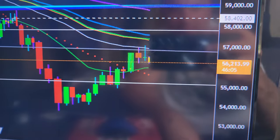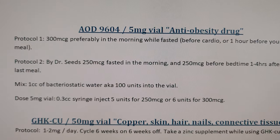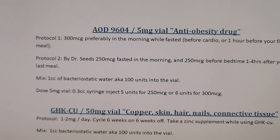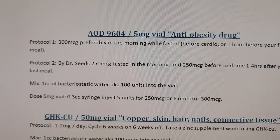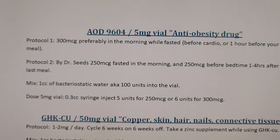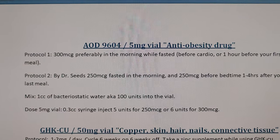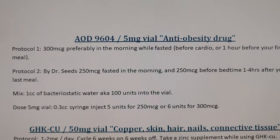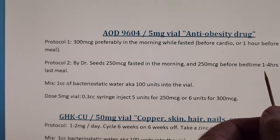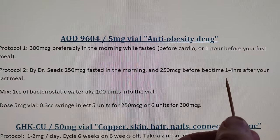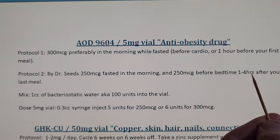AOD 9604, five milligram anti-obesity drug. Protocol number one: 300 micrograms, preferably in the morning while fasted, before cardio or one hour before your first meal. Protocol number two by Dr. Seeds: 250 micrograms fasted in the morning and 250 micrograms before bedtime, one to four hours after your last meal. This depends on whether you're on tirzepatide or semaglutide, because those slow your digestion down.